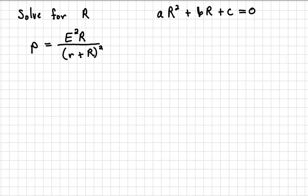Okay, so the first thing I'm going to do is I'm going to multiply both sides by r plus R quantity squared. So I'm going to say r plus capital R quantity squared times P equals r plus capital R quantity squared times E squared capital R. All over the quantity plus R, all over the quantity, r plus R, right, that quantity squared.